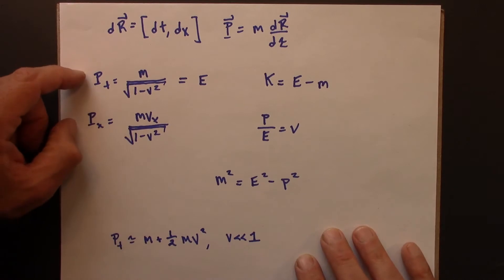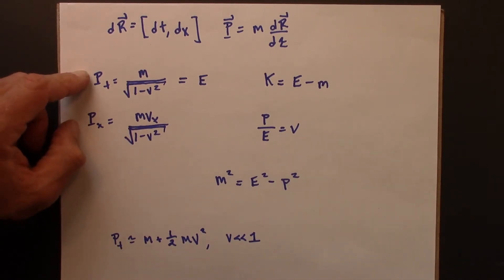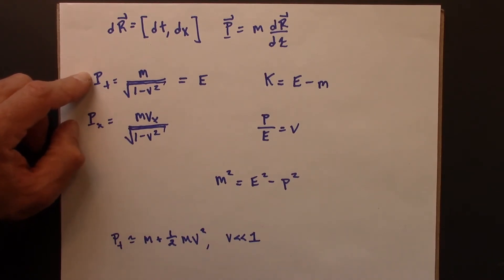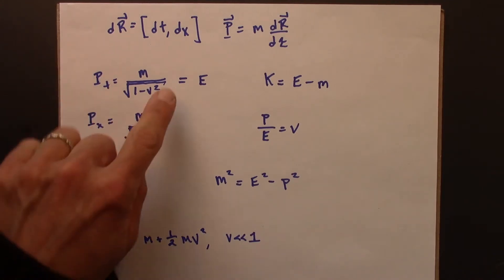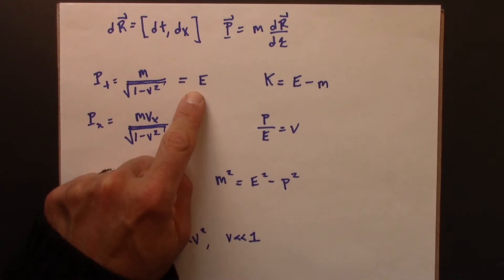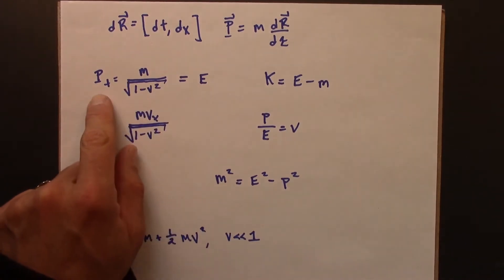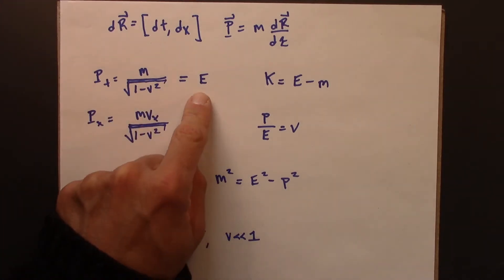That leads to these two equations for the t and x parts of momentum. The t part of momentum seems unusual, because in classical physics momentum is just x, y, z. But we saw that it made sense to identify this as E, so that the time component of momentum is actually the energy.